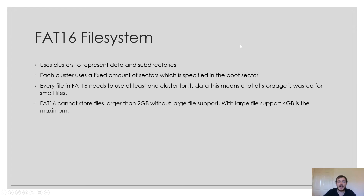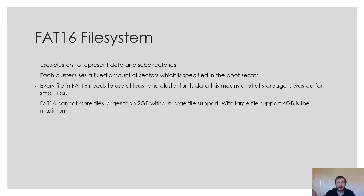The FAT16 file system uses clusters to represent data and subdirectories. Each cluster uses a fixed amount of sectors which is specified in the boot sector. Every file in FAT16 needs to use at least one cluster for its data. This means a lot of storage is wasted for small files. For example, we could have a file called hello.txt that just contains Hello World — it is still going to use at least one cluster. FAT16 is not the most efficient file system, but it's very easy to implement.